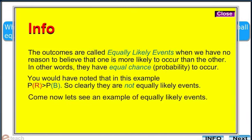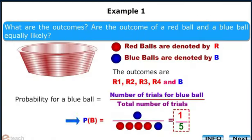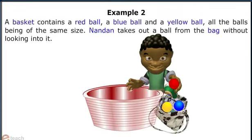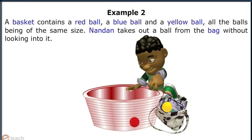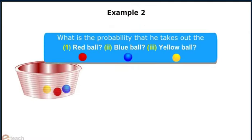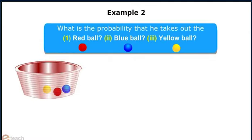Come now let's see an example of equally likely events. Let's take another example. A basket contains a red ball, a blue ball, and a yellow ball, all the balls being of the same size. Nandan takes out a ball from the bag without looking into it. Then, what is the probability that he takes out the red ball or the blue ball or the yellow ball?